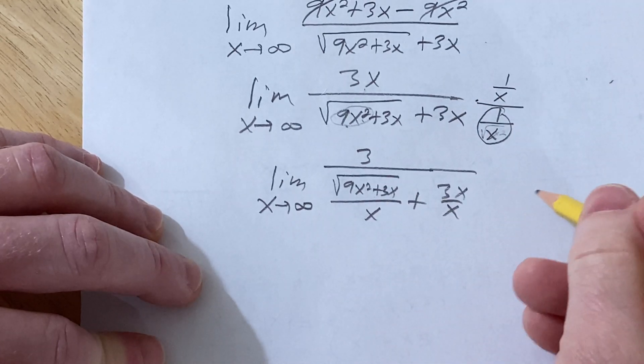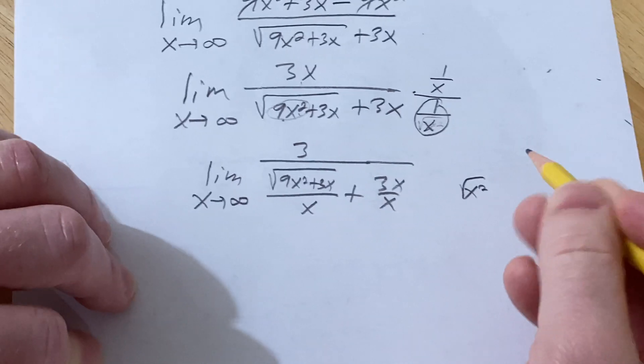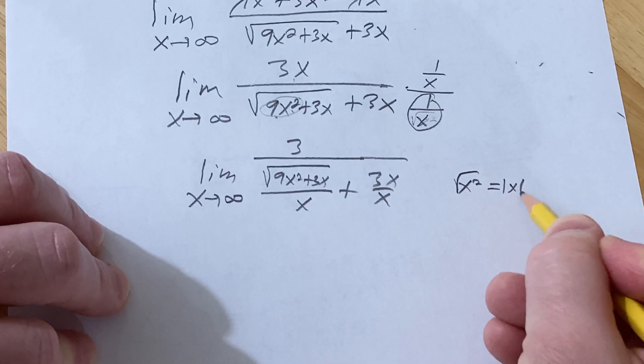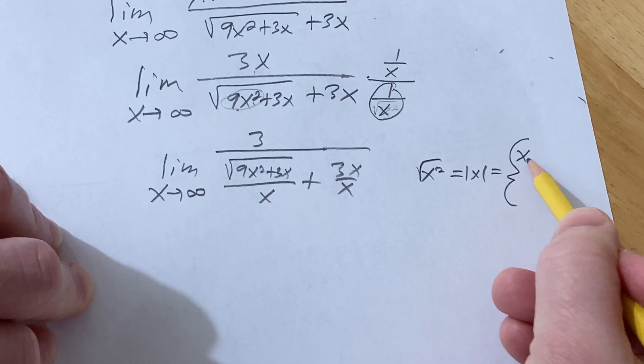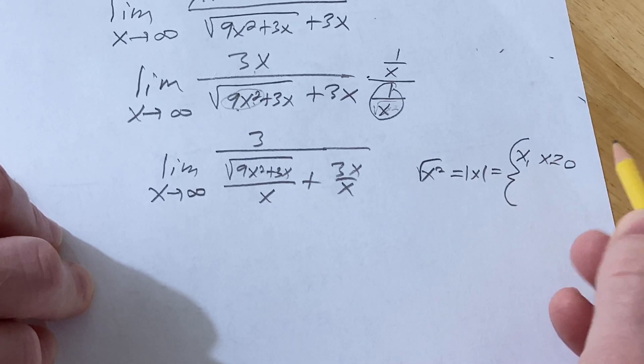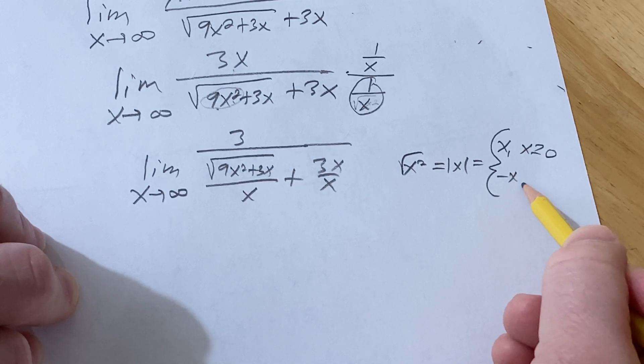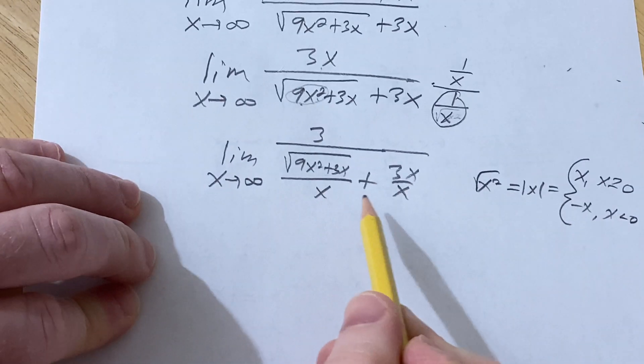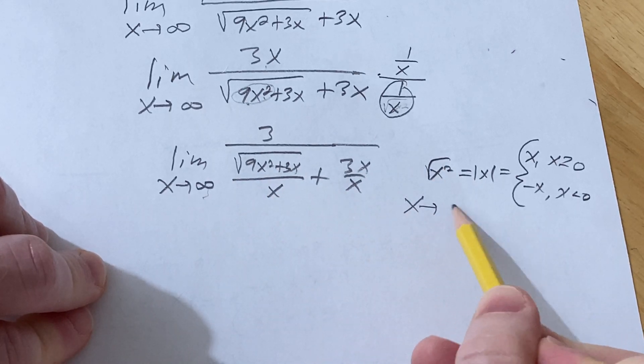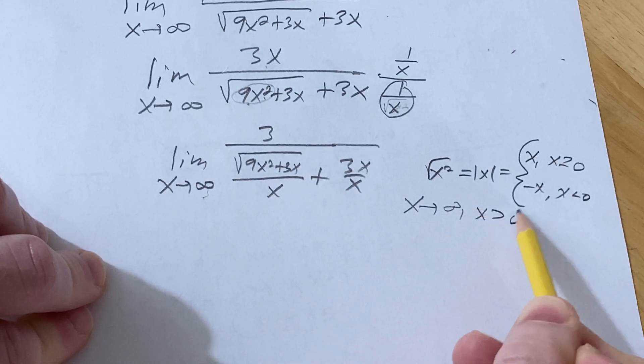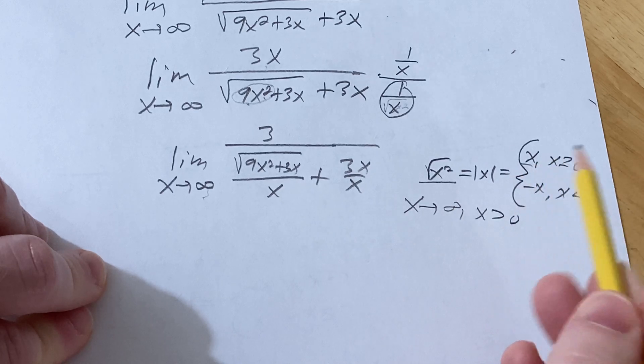So the trick is this. The square root of x squared is equal to the absolute value of x, and that's equal to a piecewise function, and that's x if x is greater than or equal to 0, and it's minus x if x is less than 0. So in this particular problem, x is approaching infinity. So x is positive.